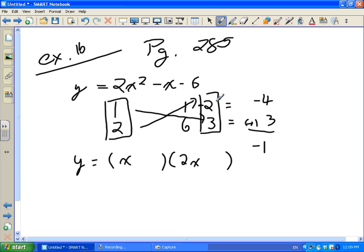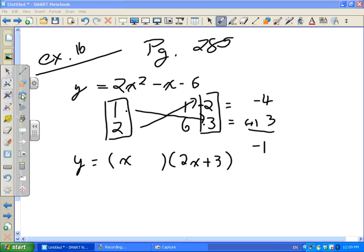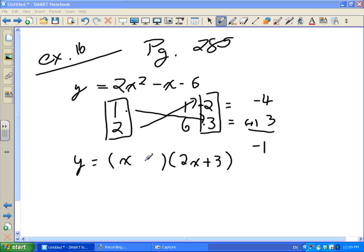And remember, these numbers need to go into the opposite bracket of what I multiplied them by. So it was 1 multiplied by 3. So this positive 3 goes into the opposite bracket of my 1x. Which means when I multiplied my 2 times negative 2, the negative 2 goes into the opposite bracket of the 2x. So this is now factored properly.